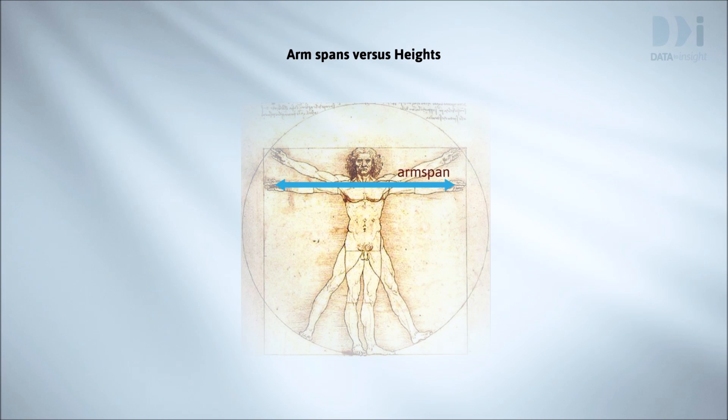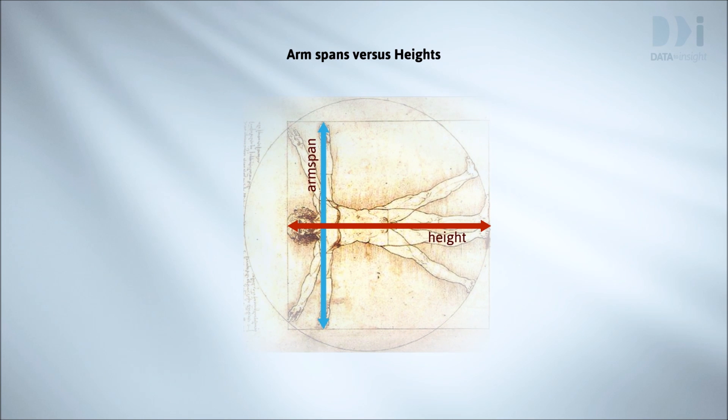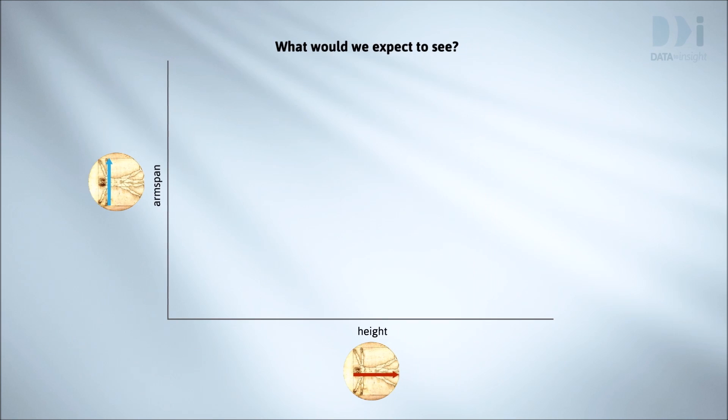We know about people's basic shapes. They come in roughly the same proportions. We'd expect someone twice as tall to have about twice the arm span, half as tall to have half the arm span. If this happened exactly, then all the points would fall exactly on a straight line. But people aren't exactly the same shape, so we'd expect something more like this.